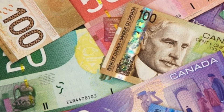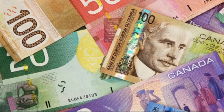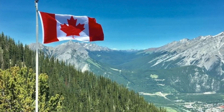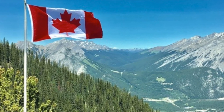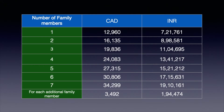Apart from these fees, you will also need to show proof of funds based on the number of family members accompanying you. Proof of funds is not something you need to spend — it just shows the Canadian government that you have enough money to settle in Canada. If you get an invite to apply for PR, you need to give written proof that you have sufficient funds. For a family of one, you need to show 12,960 Canadian dollars; for a family of two, 16,135 Canadian dollars, increasing with the number of family members.